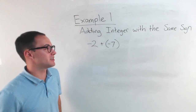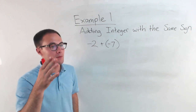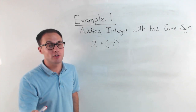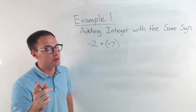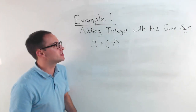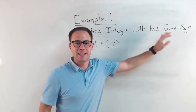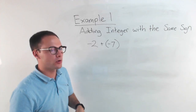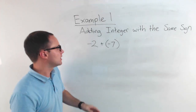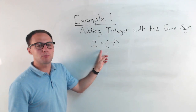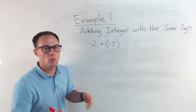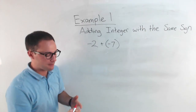Today we're adding integers. Remember, integers can either be positive or negative whole numbers, and also include zero — zero is an integer, don't forget that. Our first example: we are adding integers with the same sign, so either both are positive or both are negative. Our first example is negative two plus negative seven.